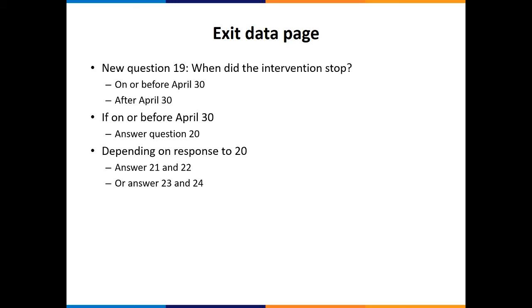So I will show that on the next screen how that logic plays out. If they select for question 19 after April 30th, then questions 21 through 24 get disabled, and teachers will be then required to answer question 25, which asks actually the same question, what was the status of the intervention, but it has one extra status in there.